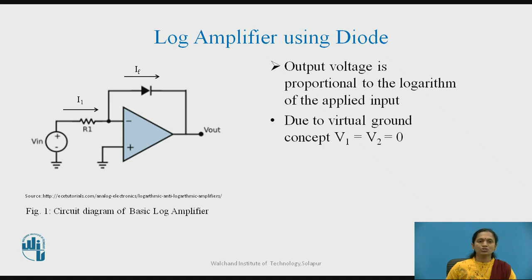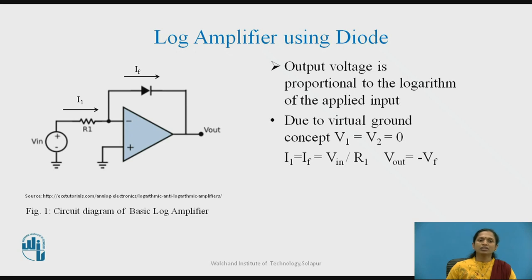When we assume the op-amp as ideal, then we can apply the concept of virtual ground. When the non-inverting terminal is grounded, the voltage at the inverting terminal will also be treated as grounded, because the output voltage is equal to gain times the difference between input voltages. When we assume the gain is very large, Vid equals zero, and we get the inverting terminal voltage equal to zero.